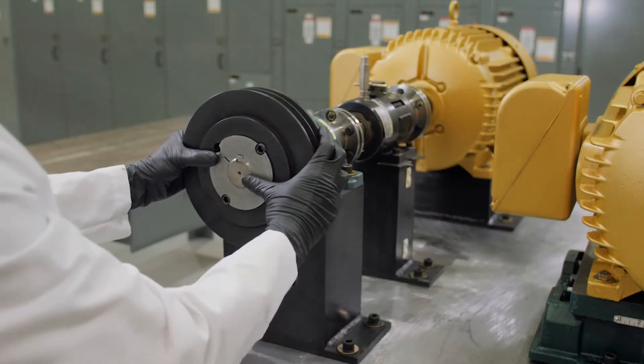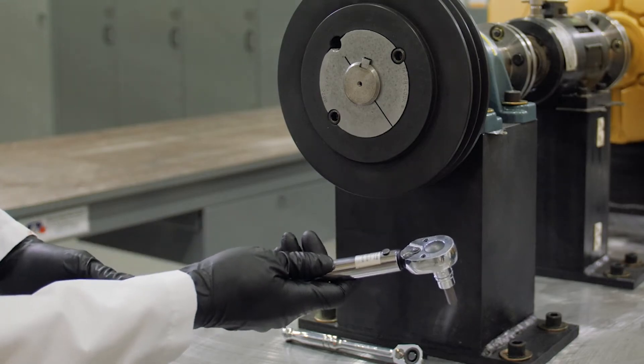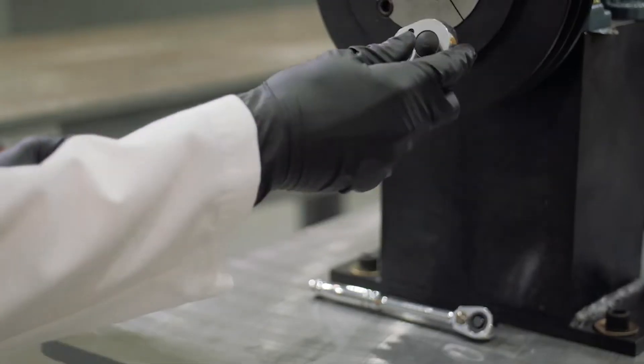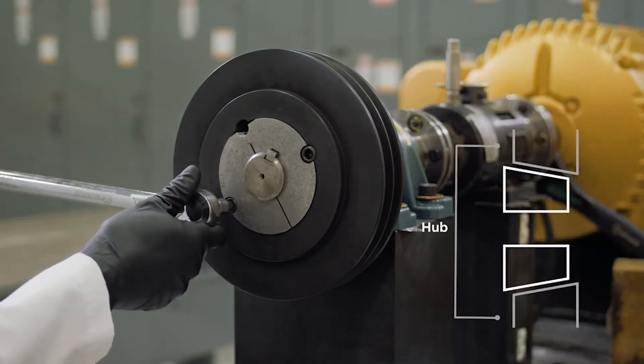Next, slide the assembly onto the shaft. Tighten the set screws evenly and alternately with a calibrated torque wrench to the specified torque value. Over-torquing can result in damage to the hub or bushing.